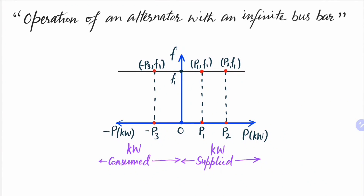Students, in this lecture we are going to discuss operation of an alternator with an infinite bus bar. We know that the voltage and frequency of an infinite bus bar remains constant irrespective of the real or reactive power supplied to it or drawn from it. The fp characteristic of an infinite bus bar is shown in figure, where f is frequency and p is active power.